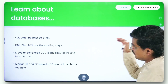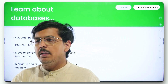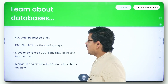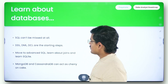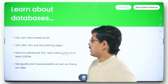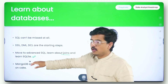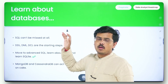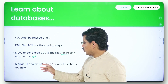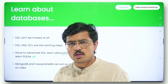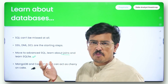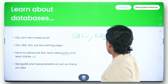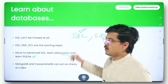Once you're done here, go ahead and learn about databases — databases are a must, whether you're a developer, data engineer, data scientist, or data analyst. SQL can't be missed at all. DDL, DML, DCL — these are the starting steps of SQL. Move to advanced SQL and learn about joins. Most importantly, learn about SQLite, but SQLite can only be learned after learning SQL, so you must learn SQL first. MongoDB and CassandraDB are some additional databases to get acquainted with — they can act as a cherry on the cake on your resume. But SQLite is super important and this is the major chunk where you should invest maximum time.